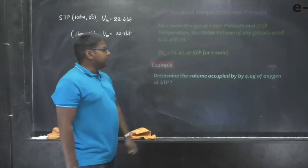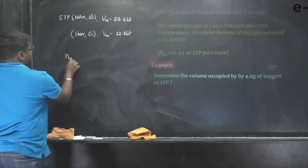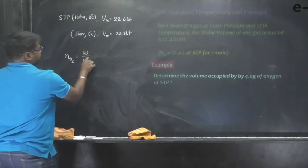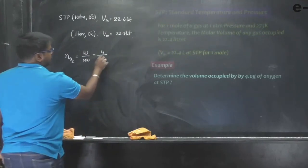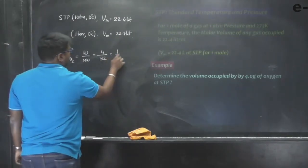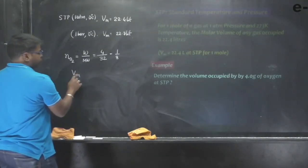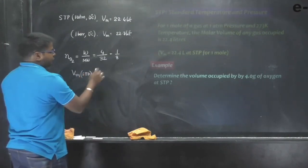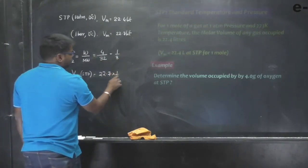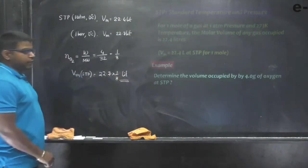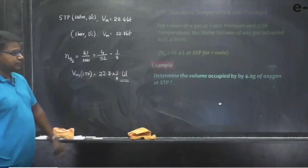For example: determine the volume occupied by 4 grams of oxygen at STP. First, calculate the number of moles: moles = weight / molar mass = 4 / 32 = 1/8 mole. Since nothing specific is mentioned, use 22.7 liters per mole (1 bar STP). For 1/8 mole: volume = 22.7 × 1/8 liters. This gives the volume occupied at STP for that amount of gas.